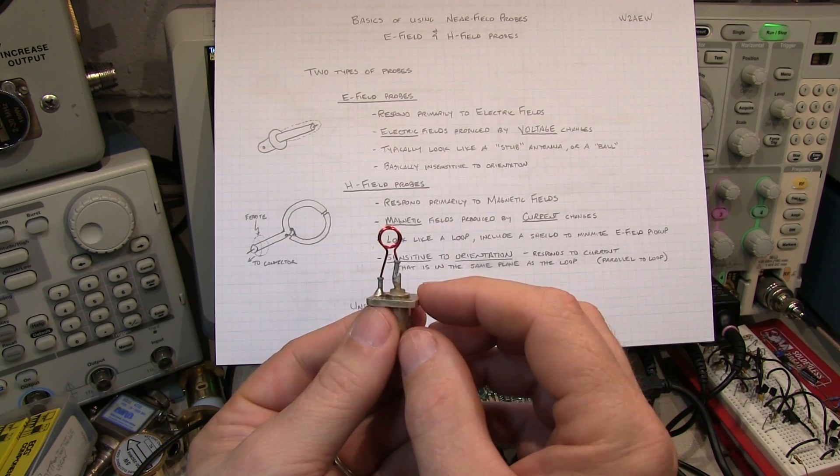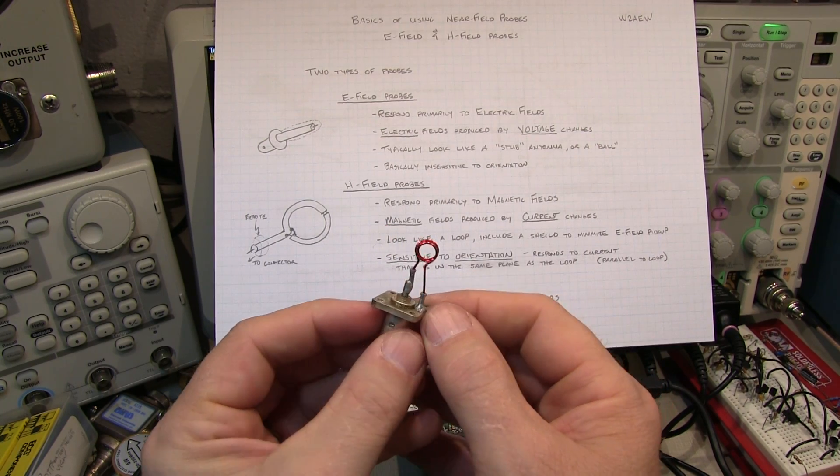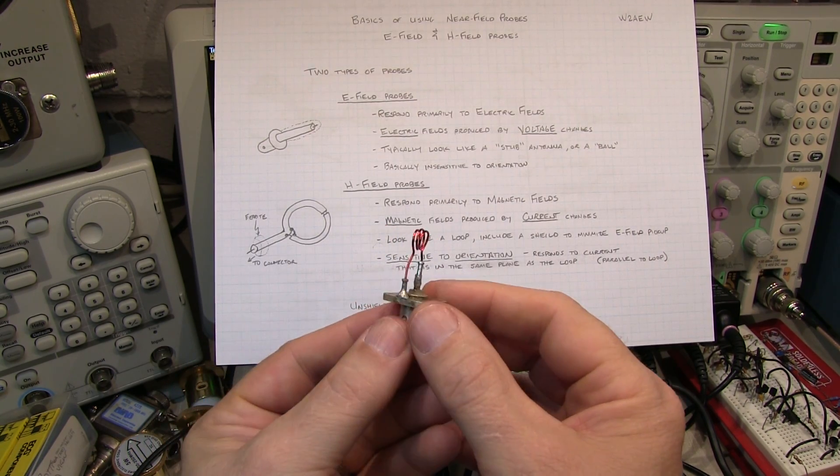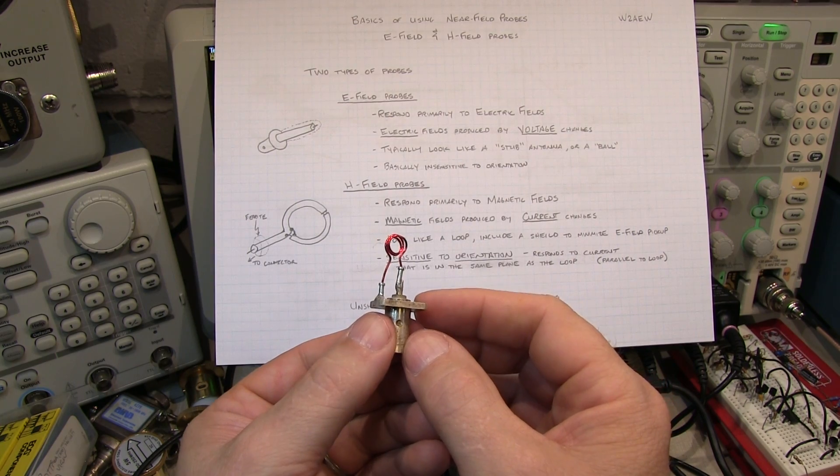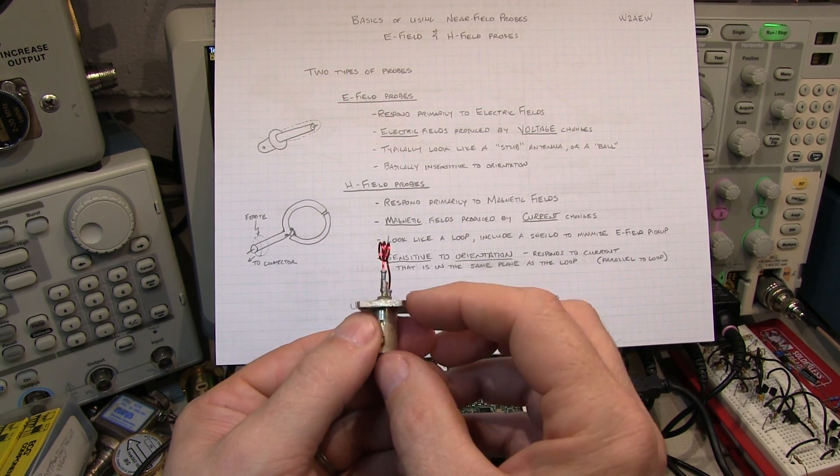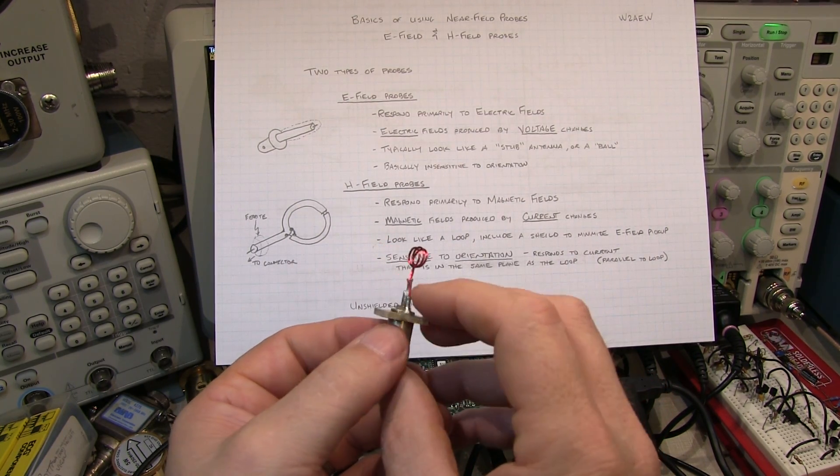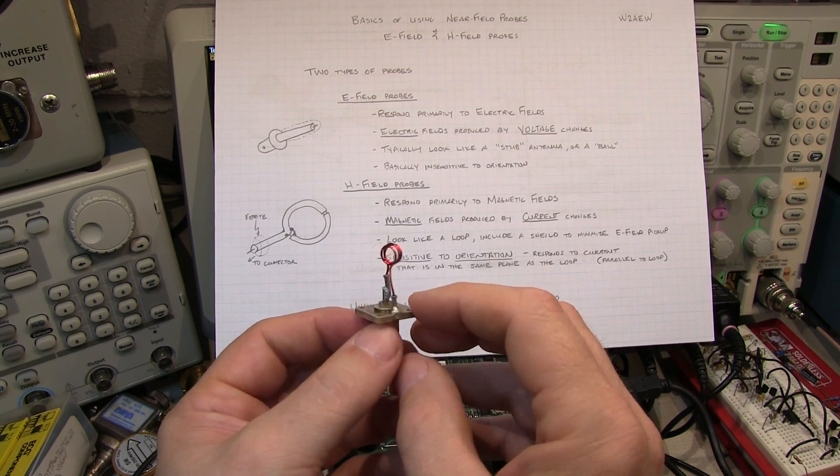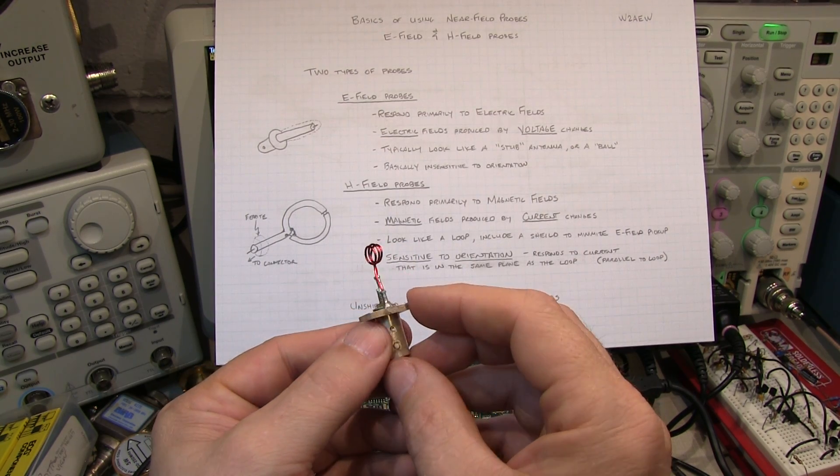Now in a pinch, if you don't have any kind of probes, you can make yourself a little unshielded loop like this and sniff around your board with that. That's going to be sensitive to both E field and H fields, and it might be a little harder to interpret some of the results. But in a pinch, it certainly would work fine.